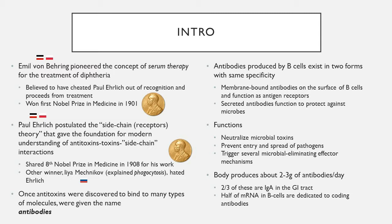Antibodies exist in two forms in B cells. There's the membrane-bound antibody on the surface of B cells, which act as surface receptors. Then there's also the secreted antibodies that function to protect against microbes in a number of different ways, including simply neutralizing the toxins, preventing entry and spread of pathogens, and triggering several microbial-eliminating effector mechanisms. The only difference between these membrane and secreted forms are just their tails.